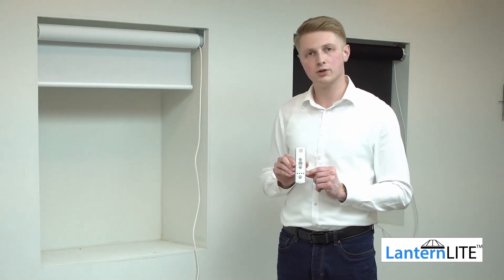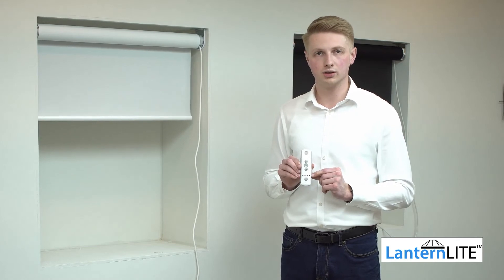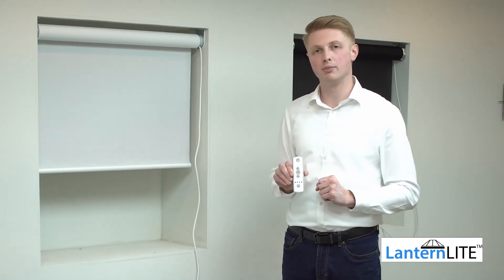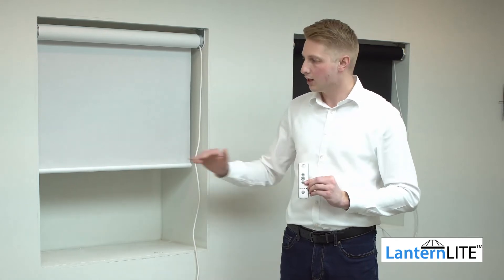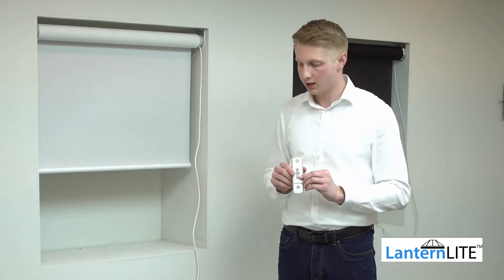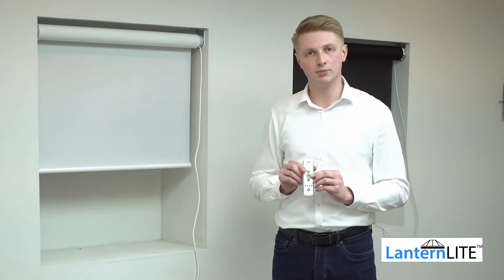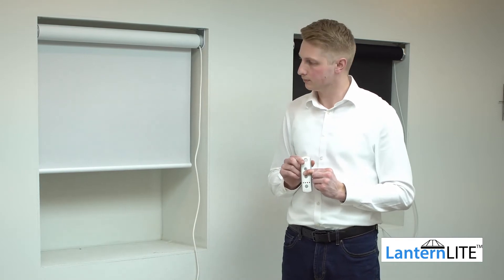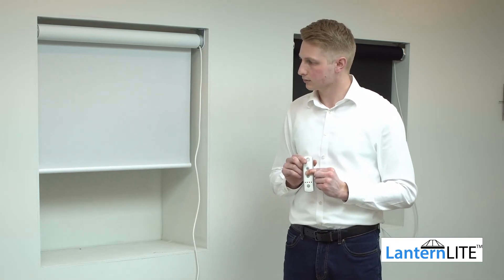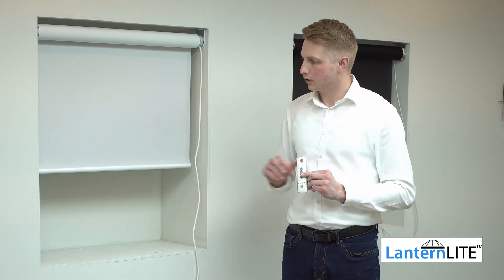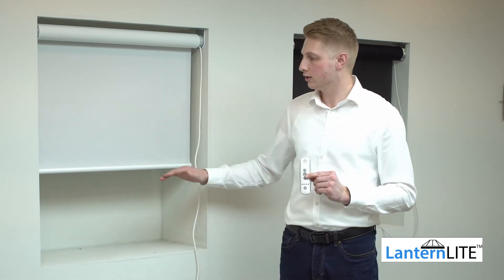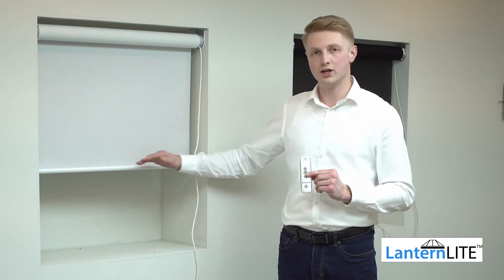Likewise, if I press the down button once, it will travel to the bottom limit position and stop. If I want to stop it halfway, I can press the my button once. If I want to set this position as an intermediate position, I can press and hold the my button until the blind shunts. That's now set as an intermediate position and whenever I press the my button, the blind is going to travel to this point.